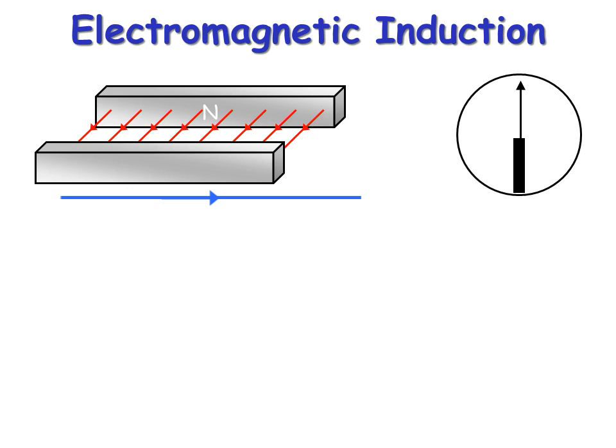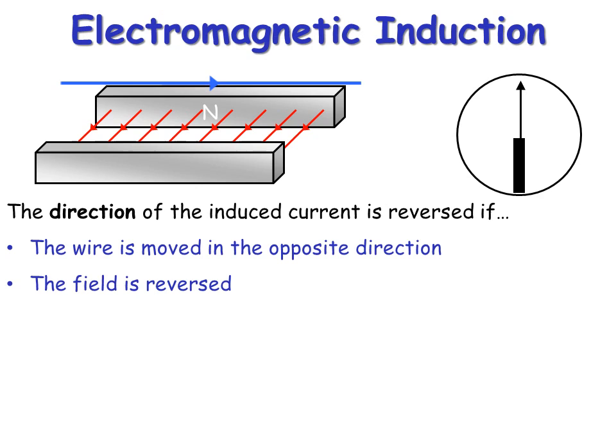But when the wire is stationary, or stopped relative to the magnet, then you will get no electric current. So moving it in or out of the magnetic field, you get an induced current.